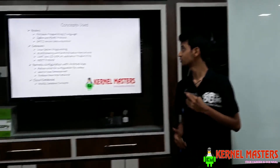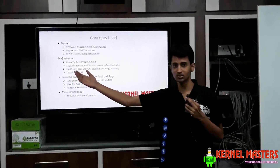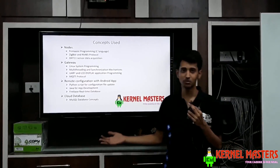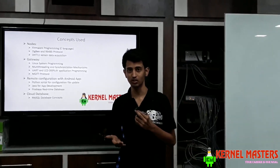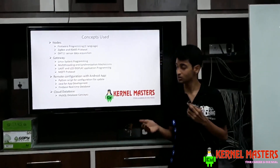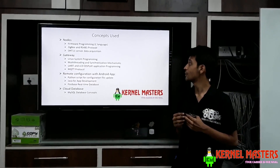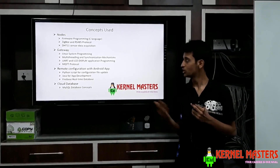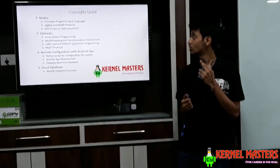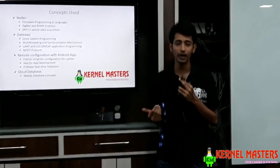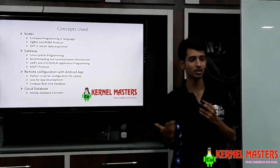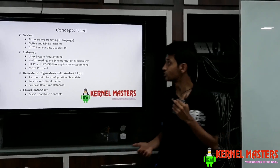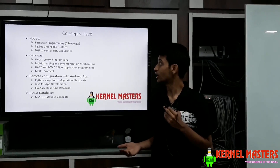Whatever we have learned in the past few months, we have tried to implement as much as possible in this project. Starting from the nodes, the C code is relatively simple. The job of the node is to accept a request from the gateway and respond accordingly, for which we used UART interrupts. We also got to know about ZigBee and RS-485 protocols and how to interface with the DHT11 sensor. The DHT11 sensor is a very popular sensor, and we interfaced it using the bit-banging concept — which is basically when you don't have dedicated hardware, you use software as the driver.